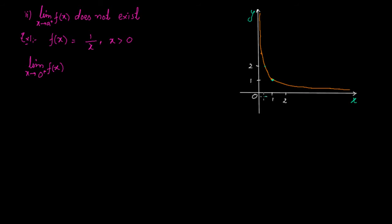When we go close to zero from right to left, the function keeps increasing toward infinity. If we take x = 1/10, the function is 10; if we take x = 1/100, the function is 100, and so on. So as we go close to zero, the function approaches infinity. That means the limit as x approaches zero from the positive side of f(x) equals infinity — and in other words, it does not exist finitely.